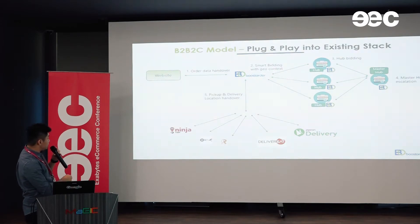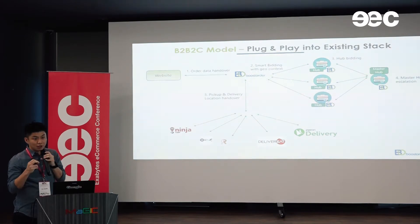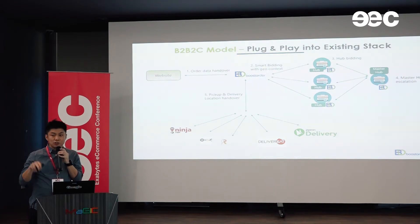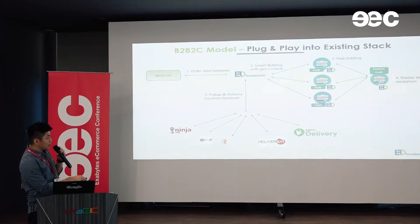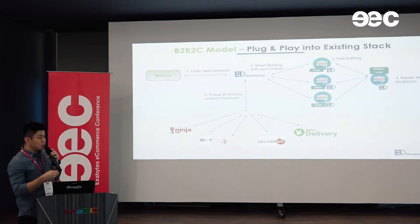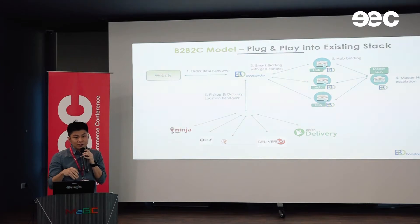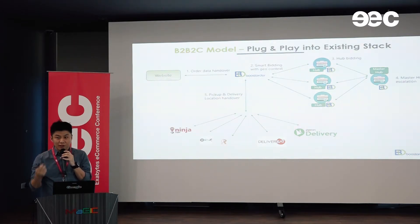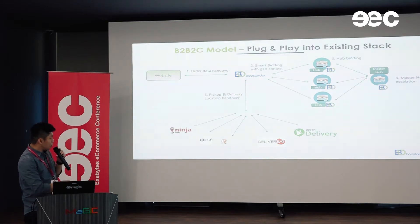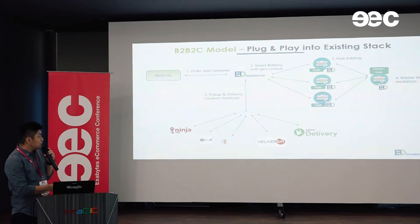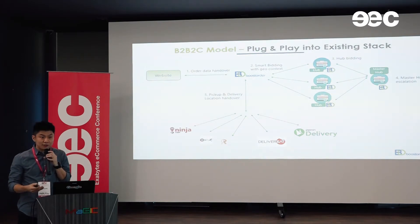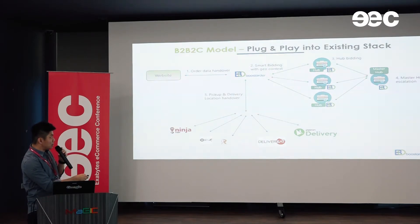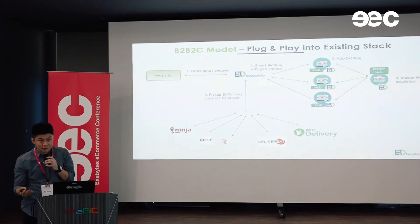So to reiterate: the order comes in from the website, and we have a smart bidding system with geo-context. It can be set based on postcode or the nearest 10 to 20 retail stores. If a retailer is not responding, it escalates to the master hub. We bring this a step further: if you want to bring your offline business online and don't want to invest in a delivery fleet, the system is already integrated with on-demand logistics providers to pick up goods from retail stores and ship to customers.